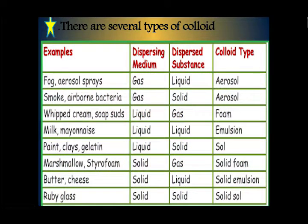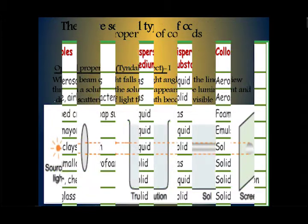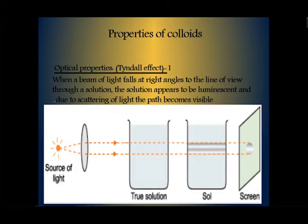There are several types of colloids: aerosol like fog and smoke; foam like cream and soap; emulsion like milk; sol like paint and gelatin; solid foam like marshmallow; solid emulsion like butter; and solid solution like ruby.